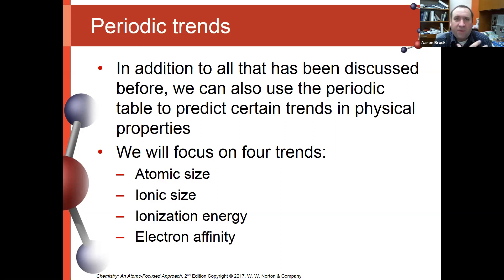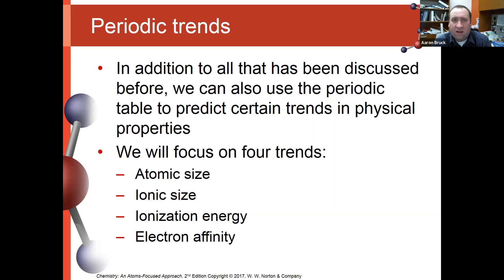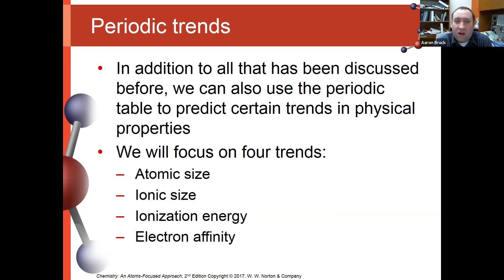Up until this point, we've done a lot of work with looking at the periodic table and using it to find a lot of different things — things like metallic versus non-metallic character, reactivity trends, electron configurations, quantum numbers, those kinds of things. We're also going to be able to do some other things in terms of physical properties.